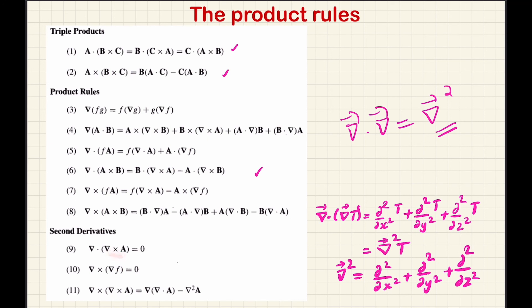The divergence of the curl of any vector, del dot (del cross a), is always zero. If you take the curl of a vector and then the divergence, the result is always zero. The curl of the gradient of a scalar function is also always zero — if a scalar function has a gradient and you take the curl, you get zero. For the curl of a vector using the triple product, expanding gives del(del dot a) minus del-squared a. Del dot del is equivalent to del-squared, confirming the second derivative identities.